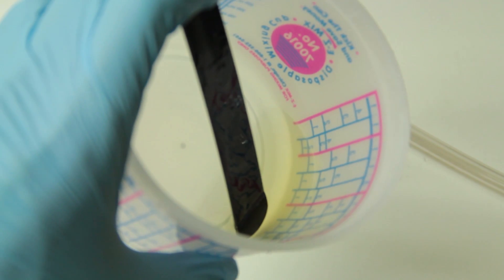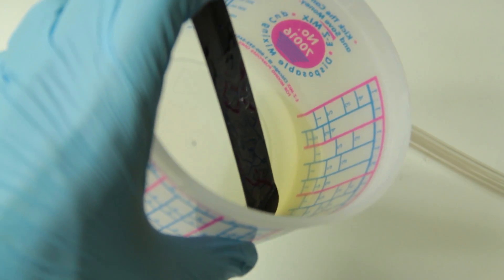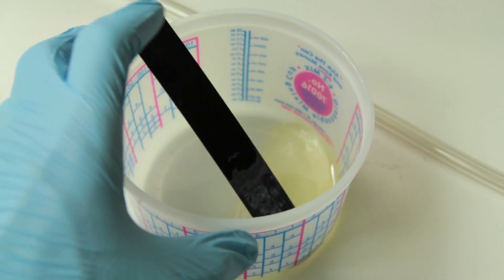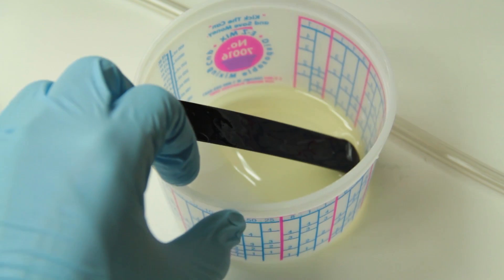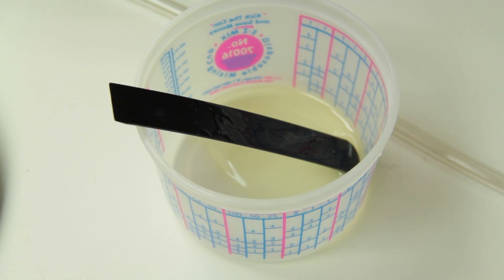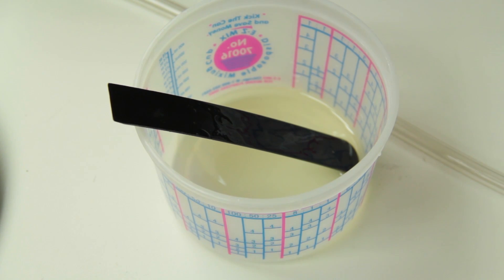If we would have wanted to modify the epoxy with something, we would have done so prior to actually sticking it in the chamber. We would have mixed the two parts of the epoxy first. Then we would have mixed the modifier in afterwards. You always want to make sure that your part A and part B are mixed thoroughly before anything else gets into the mix.